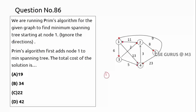In Prim's algorithm we need to start from a vertex and check all adjacents. Adjacents of 1: 1-2, 1-3, 1-4, 1-5 — all are there. Among all, we have to select the minimum. 1-2 is 11, 1-3 is 6, 1-4 is 13, and 1-5 is 9. So the minimum is 1-3 which is 6, and the path is 1 to 3 first.